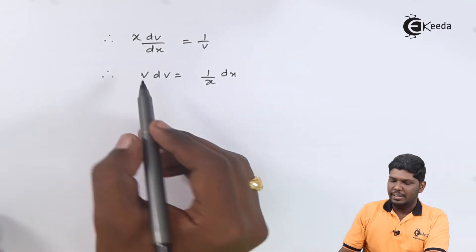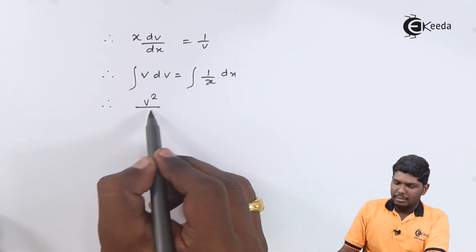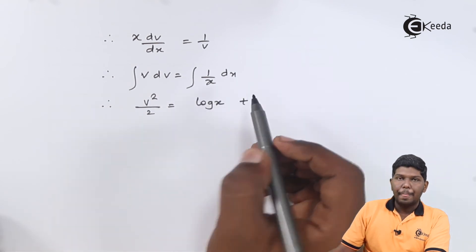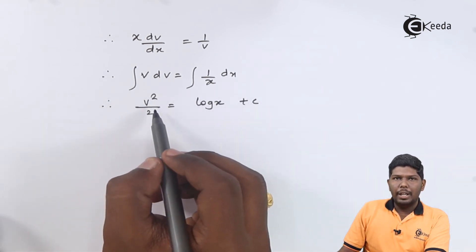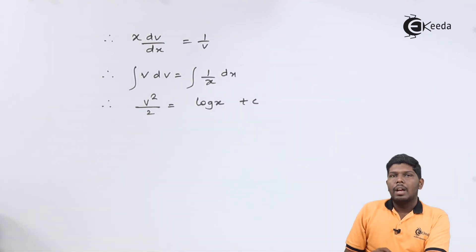This will give you v²/2 = log x + c. Once we get the answer, the next step will be resubstituting the value of v, as the question was asked in terms of x and y, so the final answer should be also in terms of x and y.